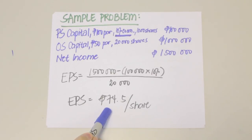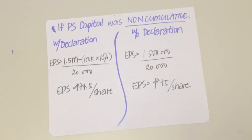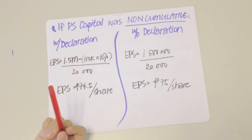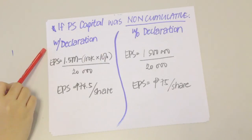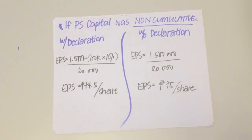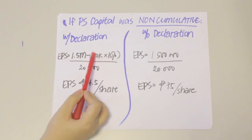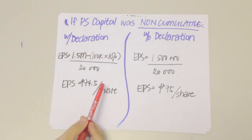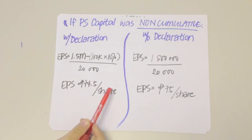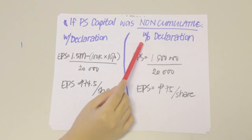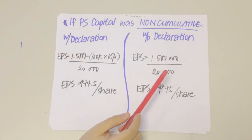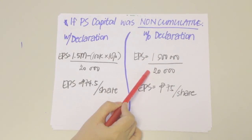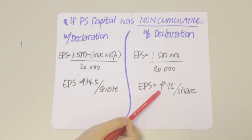Assuming we still have the same figures but now our preference shares are non-cumulative, we consider two situations: one when there is a declaration by the board of directors for dividends, and the other when there is no declaration. If there is a declaration, we deduct the preference share dividends from net income and divide by outstanding ordinary shares, giving the same EPS of 74.5 pesos per share. If there is no declaration, we no longer deduct the preference share dividends, so we simply divide net income by outstanding ordinary shares and get an EPS of 75 pesos per share.